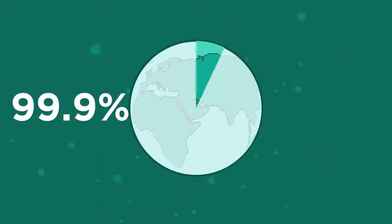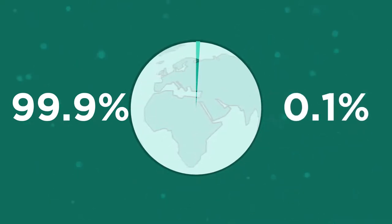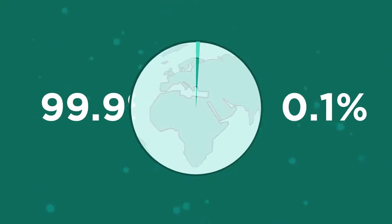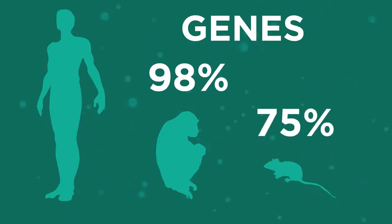The genome of every person on Earth is 99.9% the same. It's that tiny 0.1% that makes up genes that give us our unique differences. In fact, our genes are 98% similar to a chimpanzee's and 75% the same as a mouse.